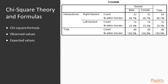Let's talk about the theory and formulas behind the chi-square test. We're looking at a cross-tabulation table examining the relationship between gender and handedness — two categorical variables, each with two categories. In our example, we have 48 males and 48 females, totaling 96 people. Out of 48 males, 32 are right-handed — about 67%. The same is true for females: 67% are right-handed. So overall, about 67% of the sample is right-handed and 33% are left-handed.